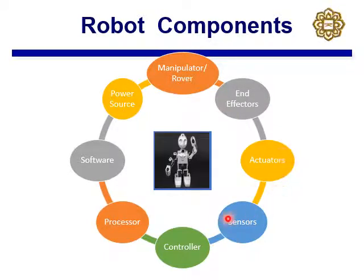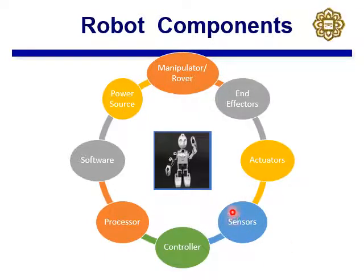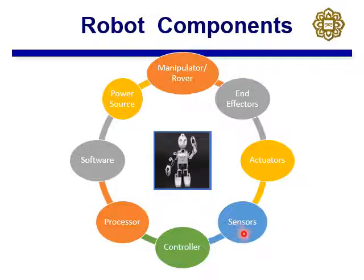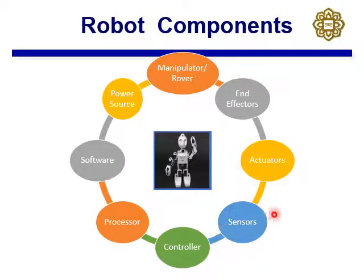To drive these joints and the end effector, you need actuators and basic sensors to operate the robot. You may also need advanced sensors to make the robot more intelligent. With some level of computational ability and sensor integration, your robot can become more intelligent.